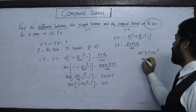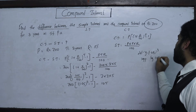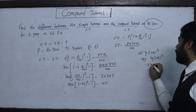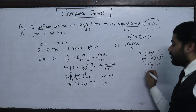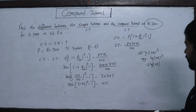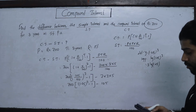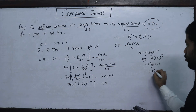Taking logarithms: log y = log(1.05)^3. Using log properties, this equals 3 × log(1.05). The value of log(1.05) is 0.0212.